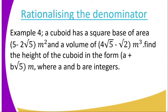Let us take an example — this is a real-life situation. You are given a cuboid with a square base of area five minus two root five meters squared, and a volume of four root five minus thirty-two meters cubed. Find the height of the cuboid in the form A plus B root five meters, where A and B are integers. Remember, the volume of a cuboid is found using the formula: volume equals base area times height. So we apply that formula here and solve for the height.